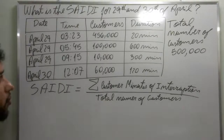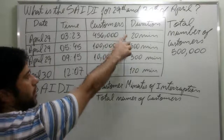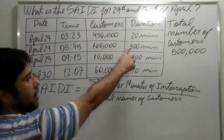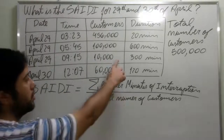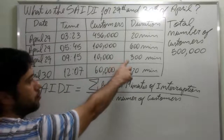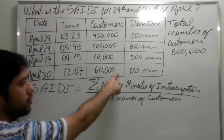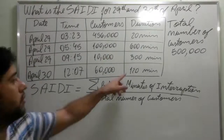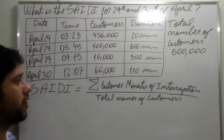Our SATI is going to be 456,000 times 20 minutes, plus 100,000 customers times 600 minutes, plus 10,000 customers times 300 minutes, plus 60,000 customers times 120 minutes — all divided by 500,000.